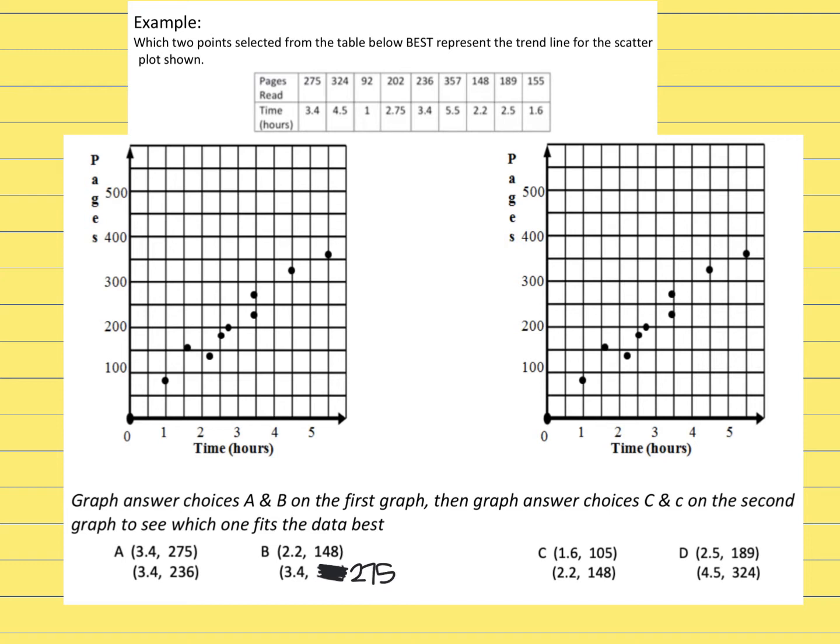Then another mistake was in answer choice C. Super sorry. 1.6, when you look in your graph right here, it should have been 155 instead of 105.